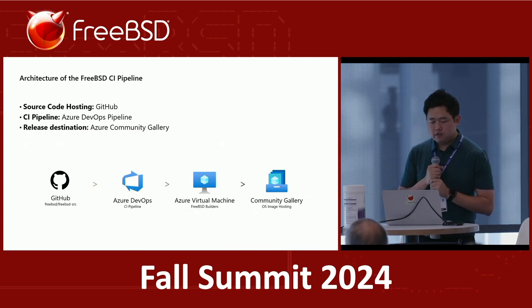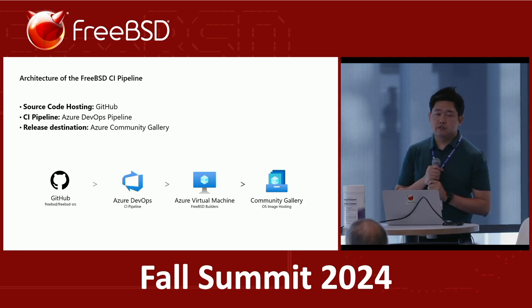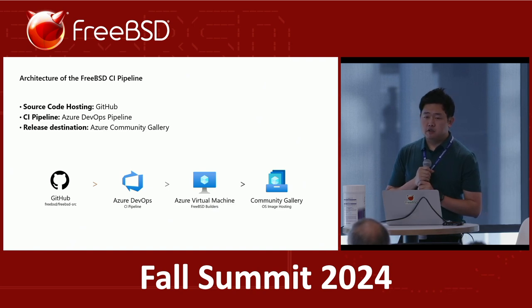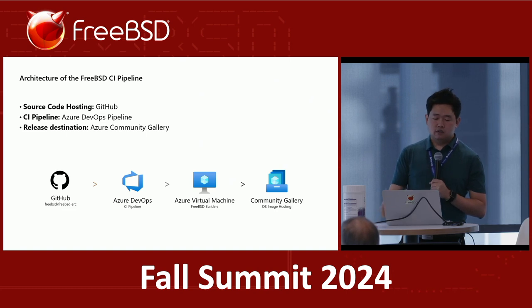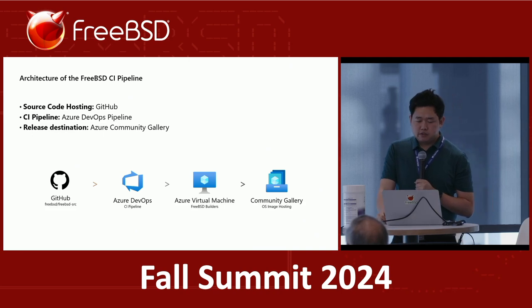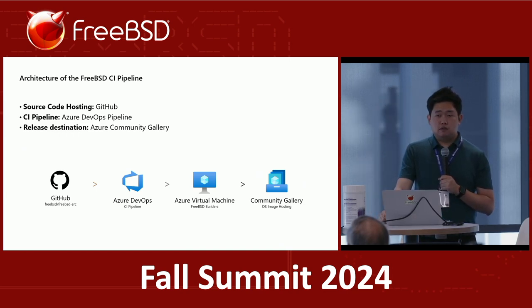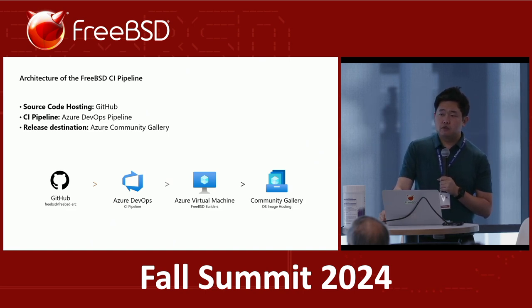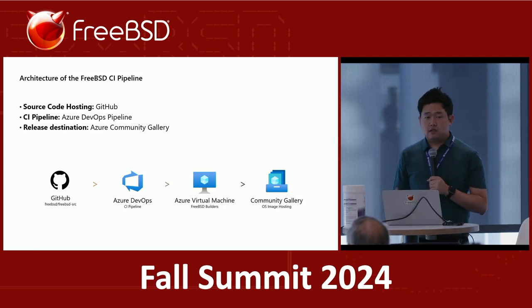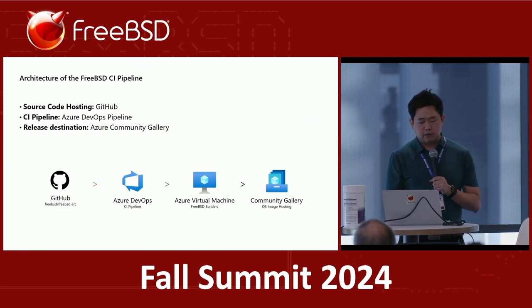Here's a simplified architecture overview of this FreeBSD CI pipeline. The source code is hosted on GitHub. There were two options to run CI on GitHub: GitHub Actions and Azure DevOps. Unfortunately GitHub Actions doesn't support FreeBSD CI right now, but Azure DevOps can support this FreeBSD scenario. We have integration — right after Microsoft acquired GitHub, they built integration between GitHub and Azure DevOps service.